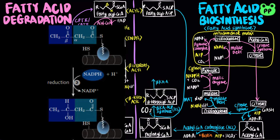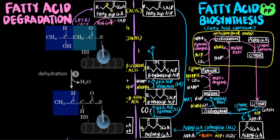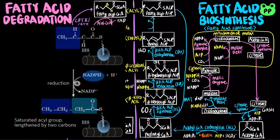The beta-ketoacyl-ACP then undergoes reduction of the carbonyl group by beta-ketoacyl-ACP reductase (KR) to form beta-hydroxyacyl-ACP, coupled to the oxidation of NADPH to NADP+. Beta-hydroxyacyl-ACP then undergoes a dehydration reaction catalyzed by beta-hydroxyacyl-ACP dehydratase (DH) to form enoyl-acyl-ACP. In the last step, enoyl-acyl-ACP is reduced to fatty acyl-ACP by enoyl-ACP reductase (ER), also coupled to the oxidation of NADPH to NADP+. The fatty acyl-ACP, now with two additional carbons, is ready to begin another round of fatty acid biosynthesis.